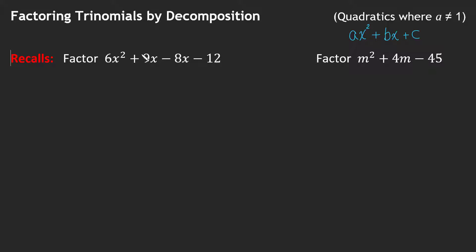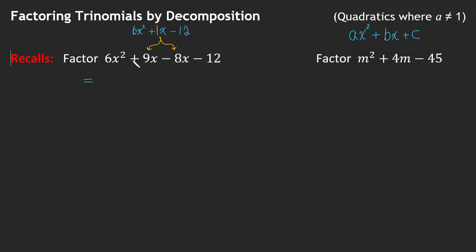Let's factor by grouping. If we take a look at this algebraic statement, this first statement can be simplified — I can subtract 8 from 9, giving me a single x, so realistically this is 6x² + x − 12. But I want to hold on to the form where I've kept it separate, because I've broken 1x up into 9x minus 8x. Right now I want to practice factoring by grouping, so we're going to factor the first two terms on their own. They have a 3x in common, so I'll factor out a 3x, and I'll be left with 2x + 3.